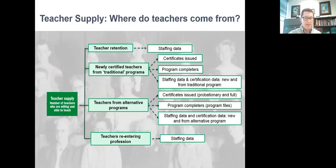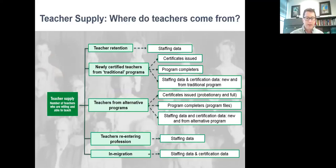One supply source is often called the reserve pool — the group of certified teachers who are willing and able to teach but who are not currently teaching. There's no easy way to assess this source except by looking at the numbers of teachers who leave their positions one year, do not appear in the staffing data for some amount of time, but then reappear later. Finally, you can look at the numbers of teachers who come from other states, measured by merging staffing data with certification data. States usually have a distinct mechanism for out-of-state teachers to become certified, typically a special code on teacher certificates. This tends to be the smallest set of teachers hired in states each year.